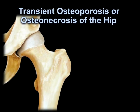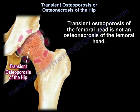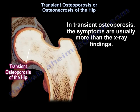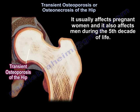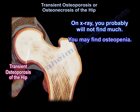Transient osteoporosis of the femoral head is not an osteonecrosis of the femoral head. In transient osteoporosis, the symptoms are usually more than the x-ray findings. It usually affects pregnant women and also affects men during the fifth decade of life. On x-ray, you probably will not find much — you may find osteopenia.